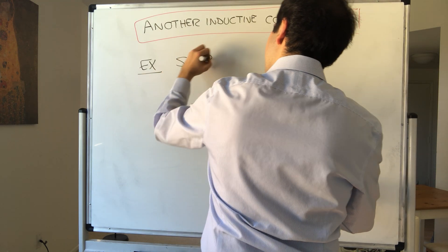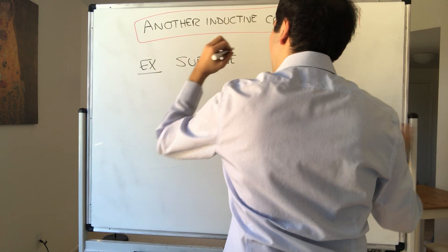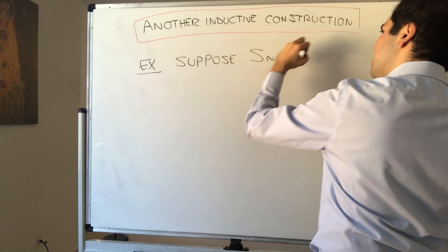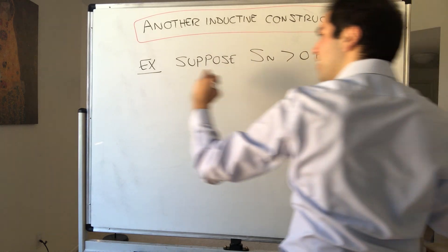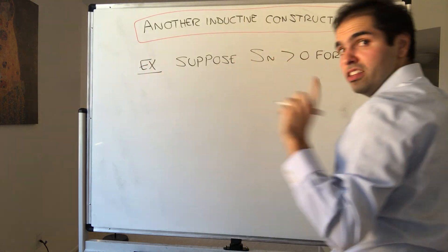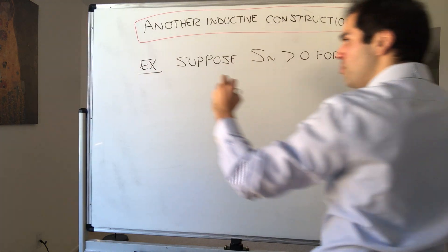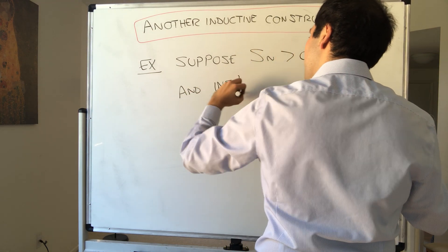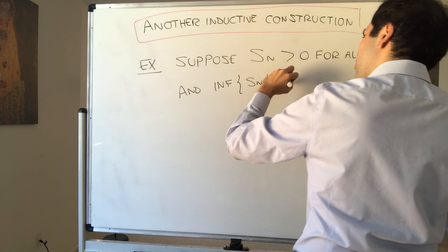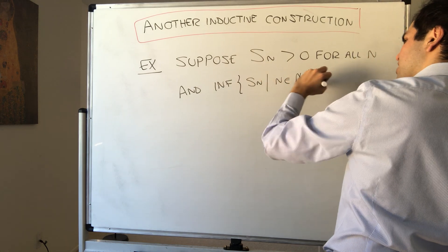Suppose you have a sequence of positive terms, so Sn is positive for all n, and Sn doesn't necessarily go to zero, but we know that the infimum, so think of the minimum value of Sn where n is in N, is zero.